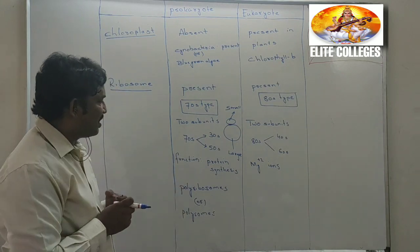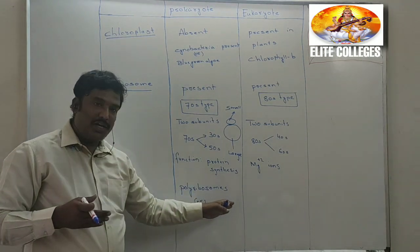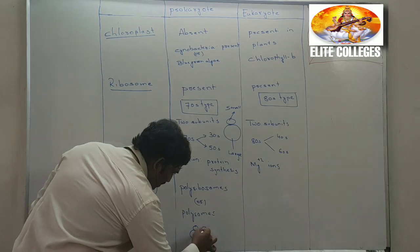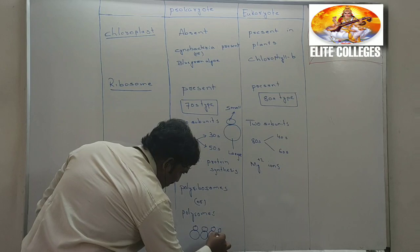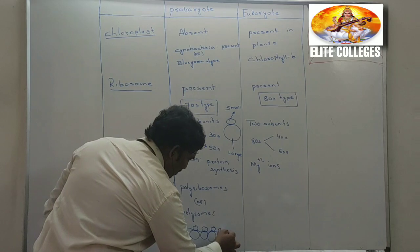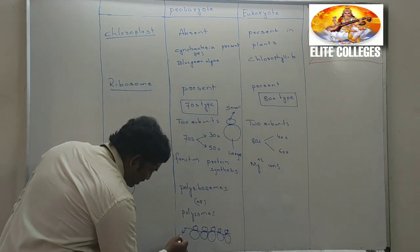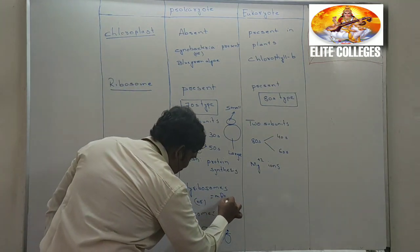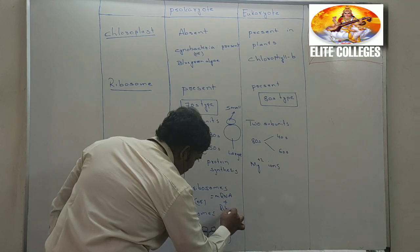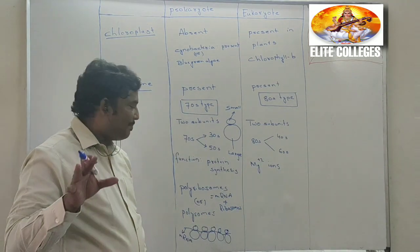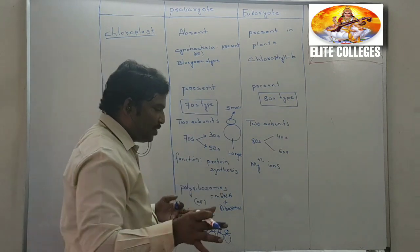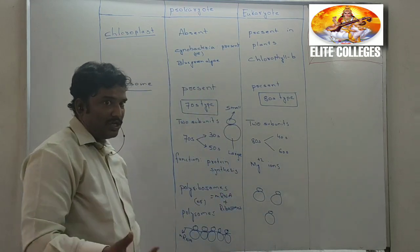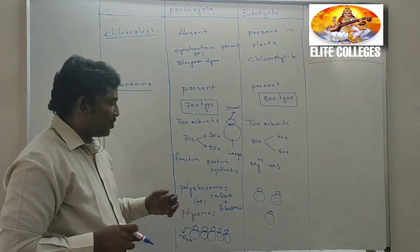In prokaryotes, ribosomes appear in the cytoplasm in the form of polyribosomes, also called polysomes. In polyribosomes, several ribosomes — four to five — are attached to a thread-like structure called mRNA. So a polyribosome is made up of mRNA plus ribosomes. In the cytoplasm of prokaryotes, ribosomes appear in the form of polyribosomes, whereas in eukaryotes they are scattered individually in the cytoplasm and are not in a polyribosomal form.